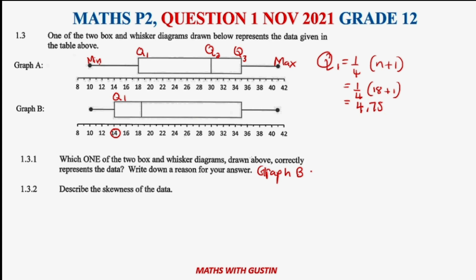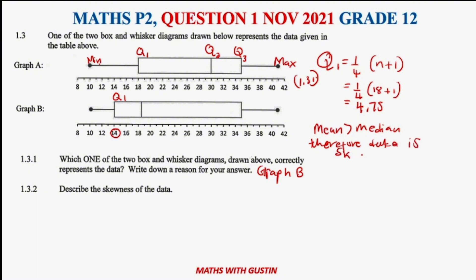Graph B best represents this data. For the reason: the mean is greater than the median, therefore the data is skewed to the right.